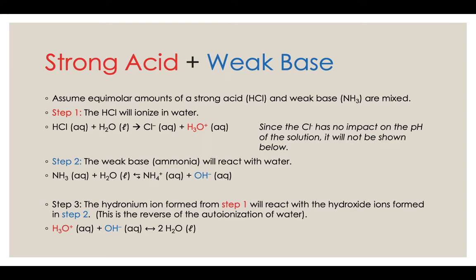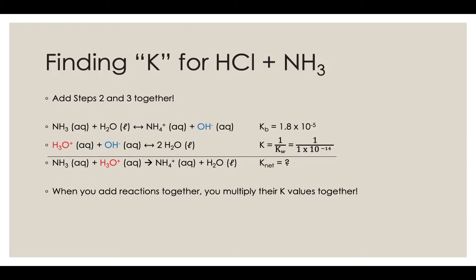The first way I'm going to show you how this reacts is kind of like a Hess's law approach, where we're going to show some reactions being added together to figure out an equilibrium constant, and then we'll see it a second way. You could think of adding steps two and three together — step two, where the hydroxide was being formed, and step three, the reverse of the auto ionization of water. If we add those together, Hess's law style, the hydroxides would cancel and one of the waters would cancel, leaving that net reaction.